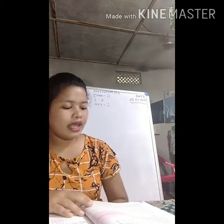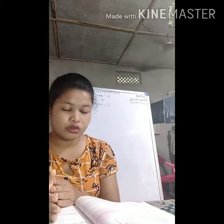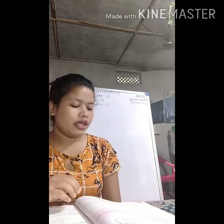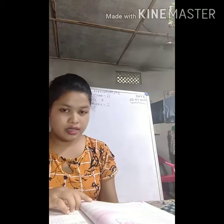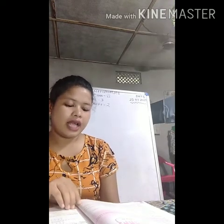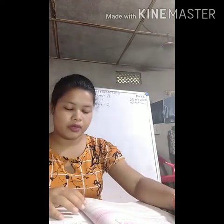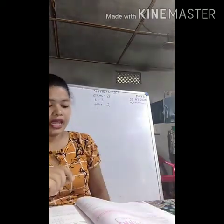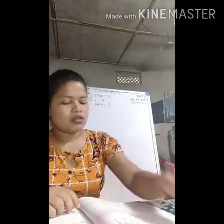Now, 1 has no predecessor in natural numbers. The predecessor of 2 is 1, but 1 has no predecessor. So we add 0 as the predecessor of 1. However, 0 is not a natural number. The natural numbers along with 0 form the collection of whole numbers. All natural numbers are whole numbers, but 0 is a whole number and not a natural number.